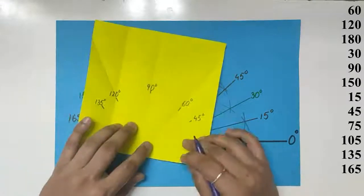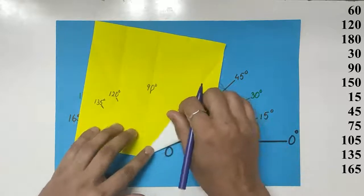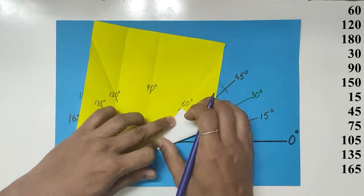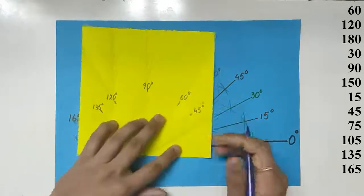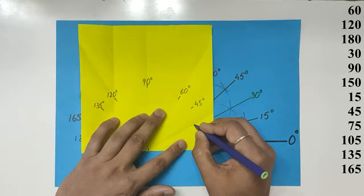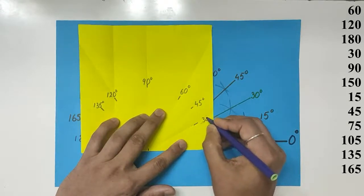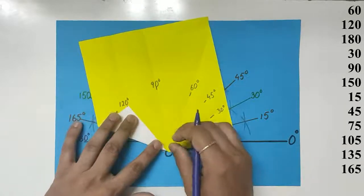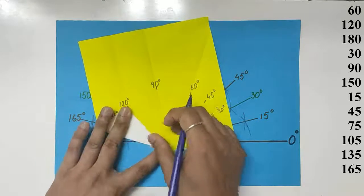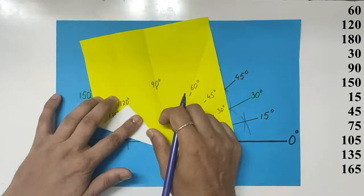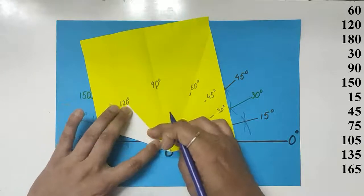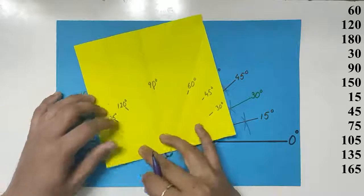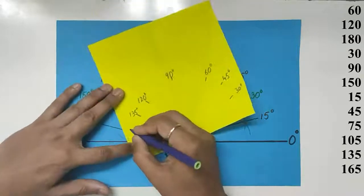Now we will get 30 degrees bisecting 60. Make 60 into half. That will give you 30. In the same way on the other side, 120 into half. So we are adding another 30 degrees to 120 to get 150 degrees. That's 150.